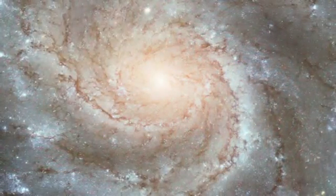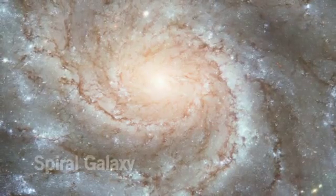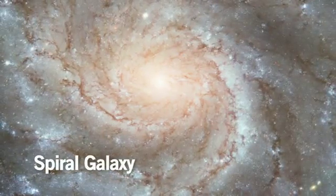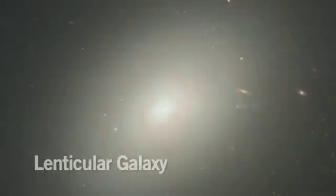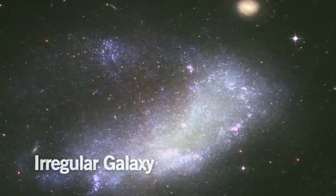While galaxies are all made of similar ingredients, their shapes are quite varied. You're probably the most familiar with spiral galaxies, like our own Milky Way. But there are also elliptical galaxies, lenticular or armless spiral galaxies, and irregular galaxies.